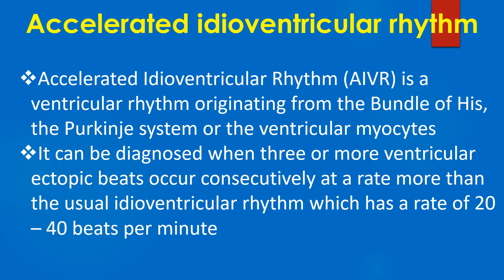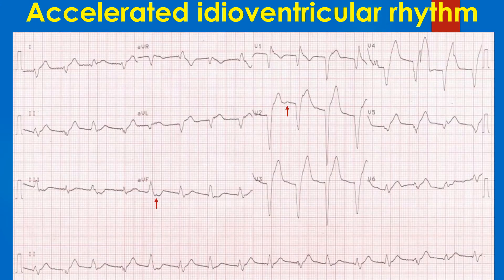Accelerated idioventricular rhythm is a ventricular rhythm originating from the bundle of His, the Purkinje system, or the ventricular myocytes. It can be diagnosed when 3 or more ventricular ectopic beats occur consecutively at a rate greater than the usual idioventricular rhythm rate of 20–40 beats per minute. An ECG showing accelerated idioventricular rhythm at around 100 per minute demonstrates dissociated P waves marked by red arrows. Some variation in QRS morphology seen in the rhythm strip could be due to fusion beats.